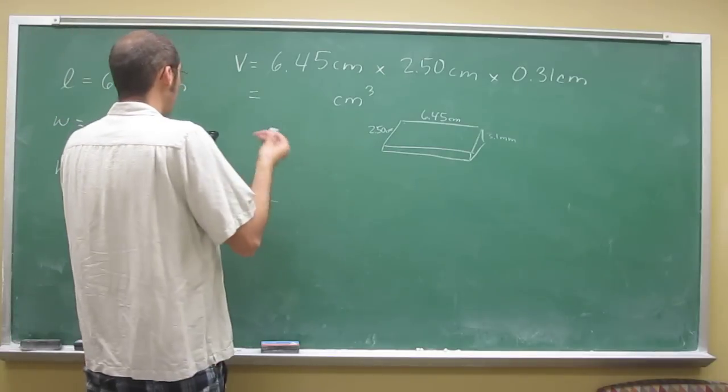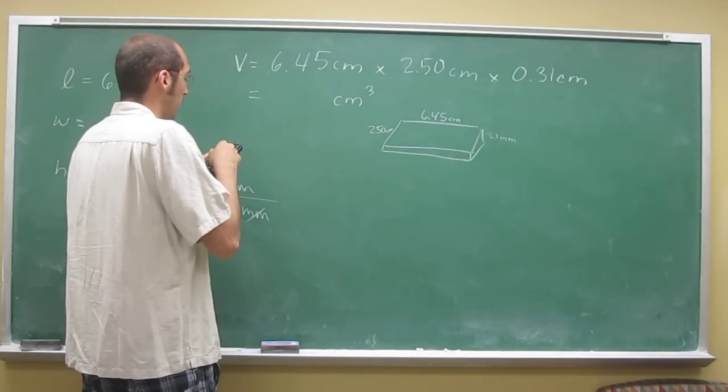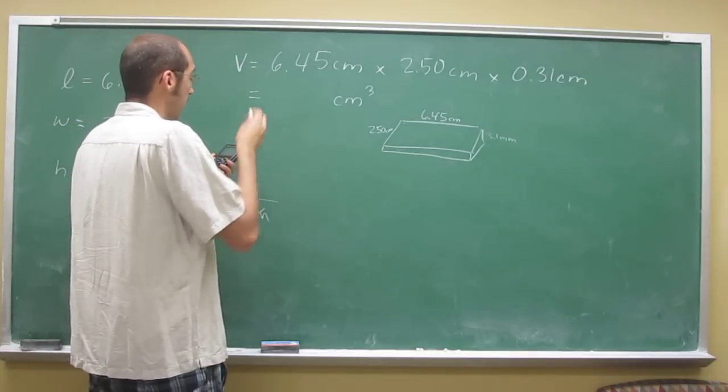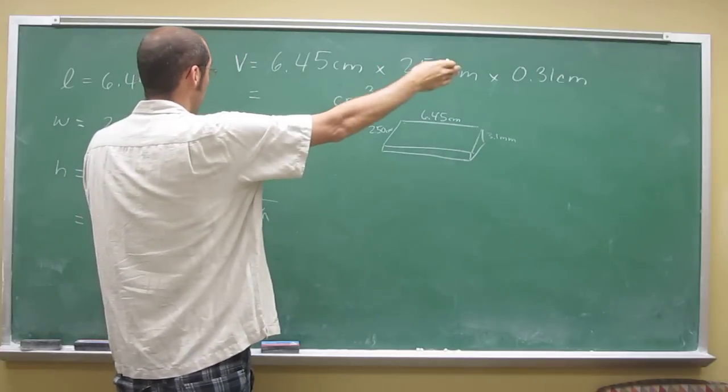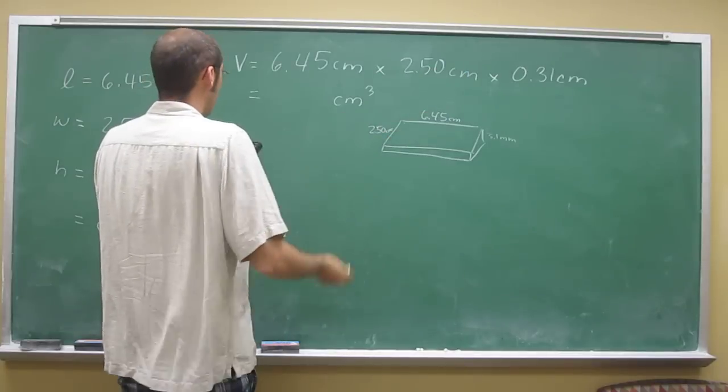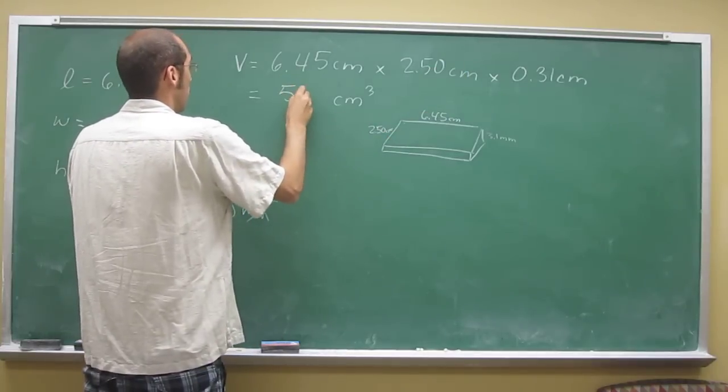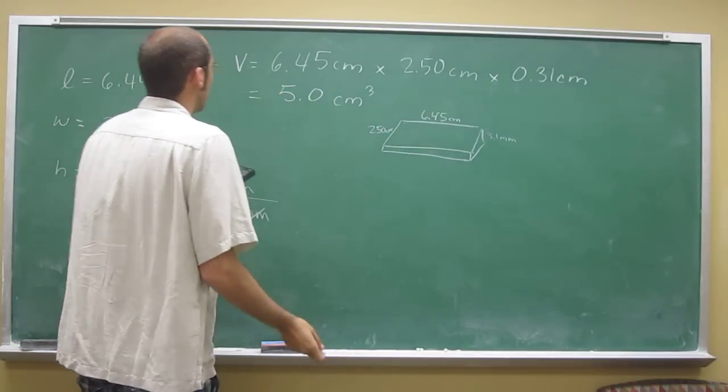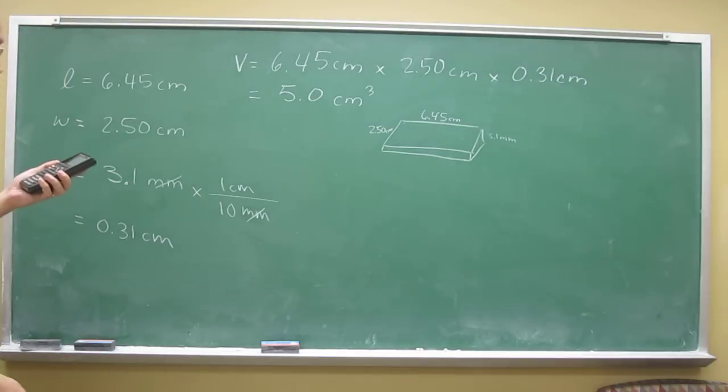On your calculator it says 4.00875, but you've got to round it to two sig figs. So it's going to be 5.0 centimeters cubed—that's the volume.